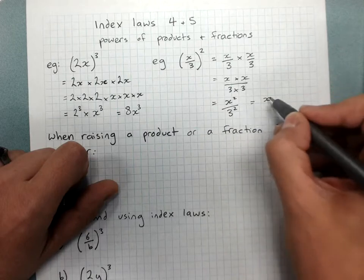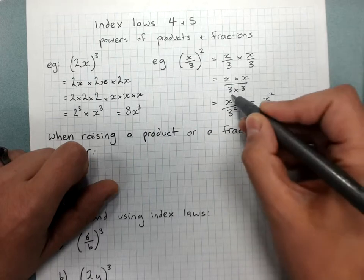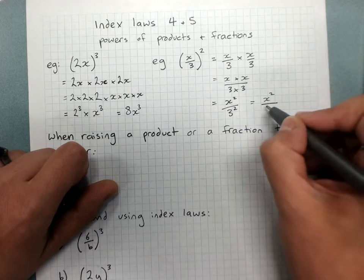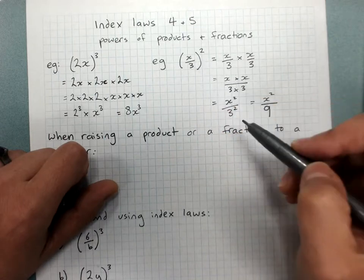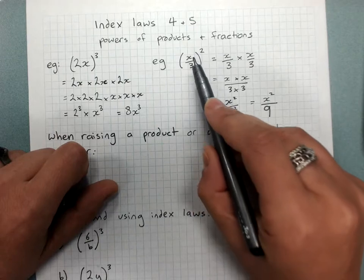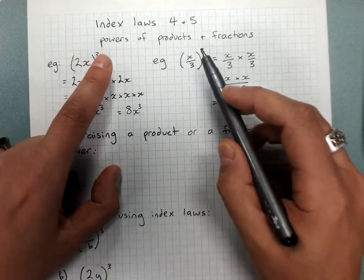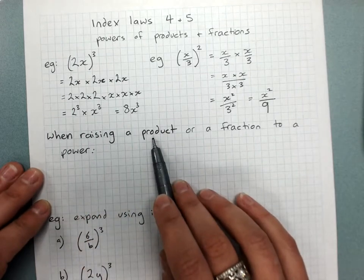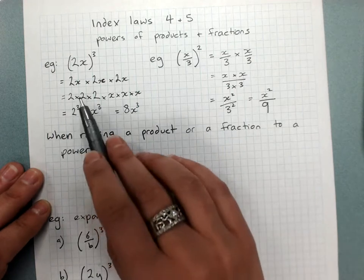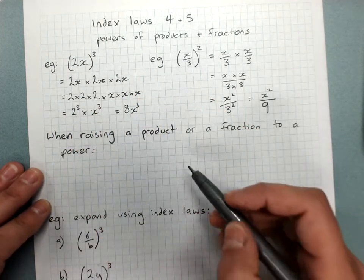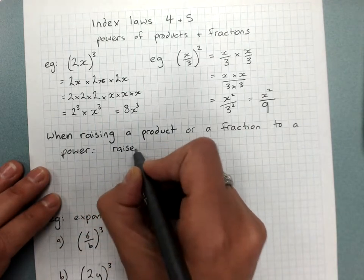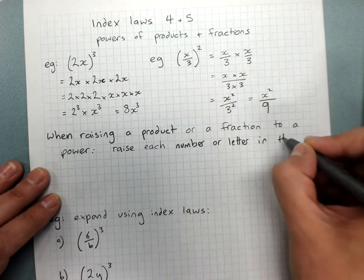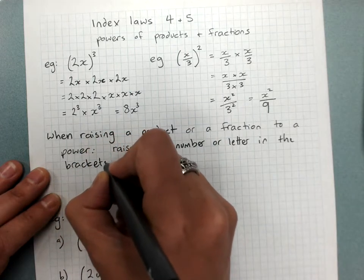When we have letters and numbers involved in index laws, we leave letters in index form and make numbers a whole number answer. 3 squared is 3 times 3, which is 9. This shows us how the rule works: if I've got brackets to a power, everything in the brackets gets separately raised to that power — whether it's a product or a fraction in brackets.